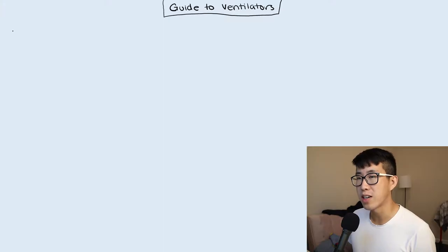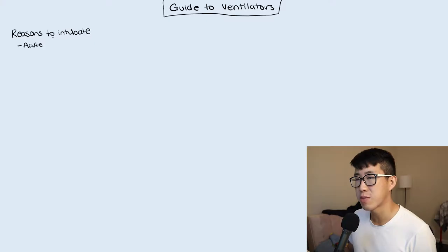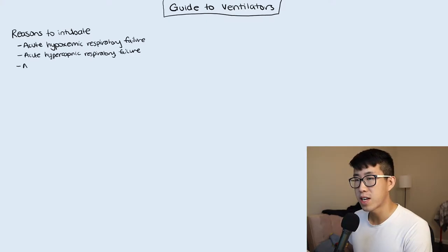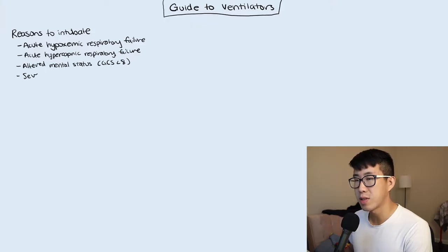The first thing we're going to talk about is what are the reasons to intubate somebody. The answer is going to be acute hypoxemic respiratory failure, acute hypercapnic respiratory failure, altered mental status — usually defined by a GCS less than 8 — and severe acidemia.